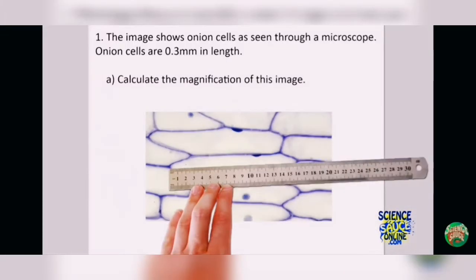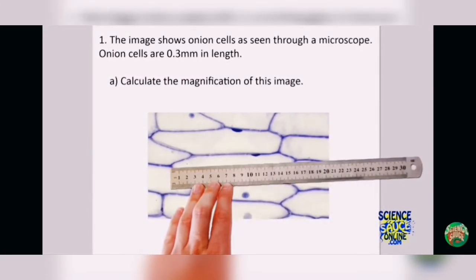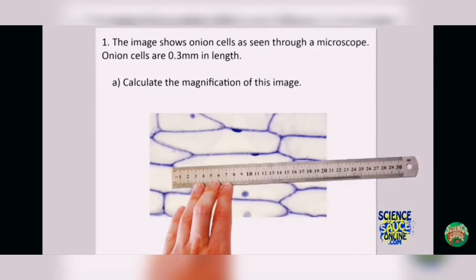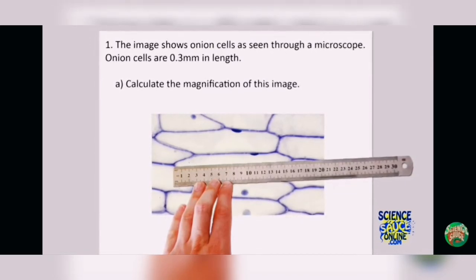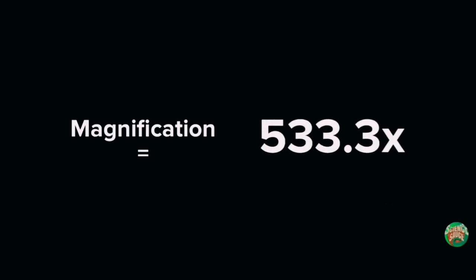So what we are going to do next is divide the image size by the actual size in order to calculate the magnification of the image. As you can see, the magnification is equal to 160 mm divided by 0.3 mm, 160 mm being the image size and 0.3 mm being the actual size, and we get the magnification 533.3x.